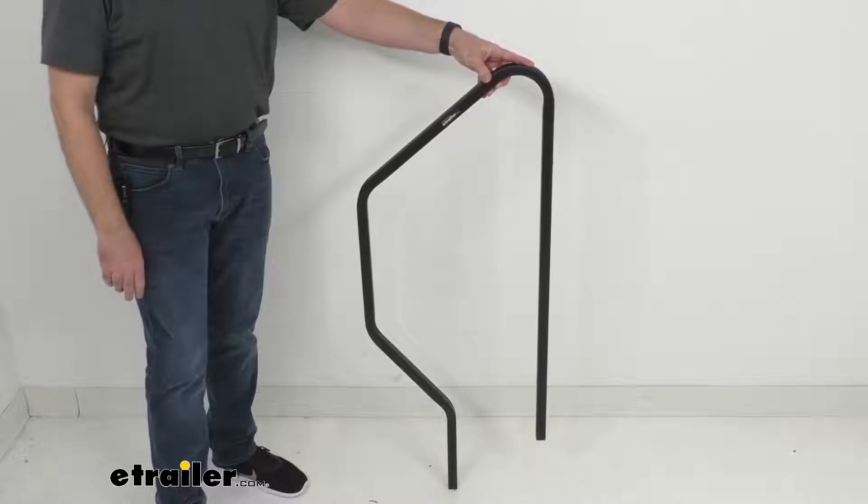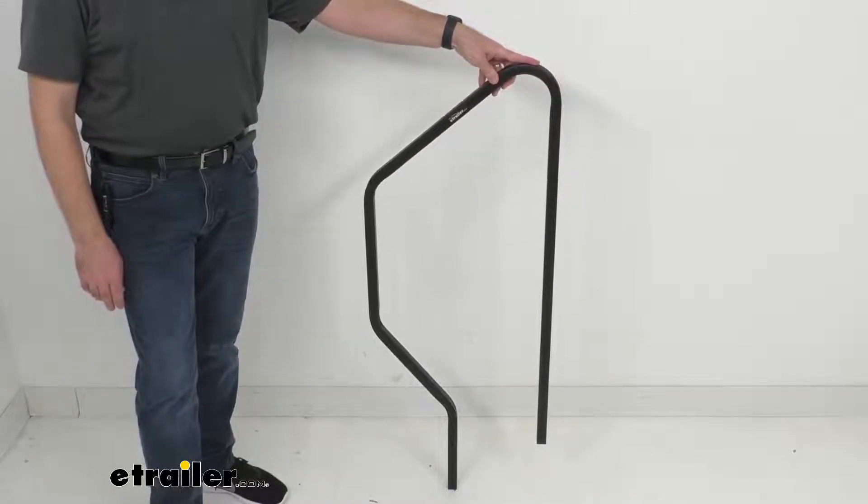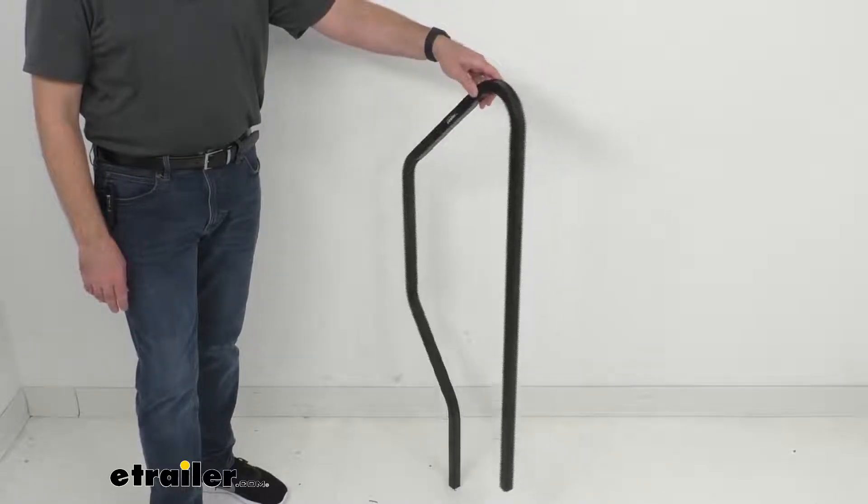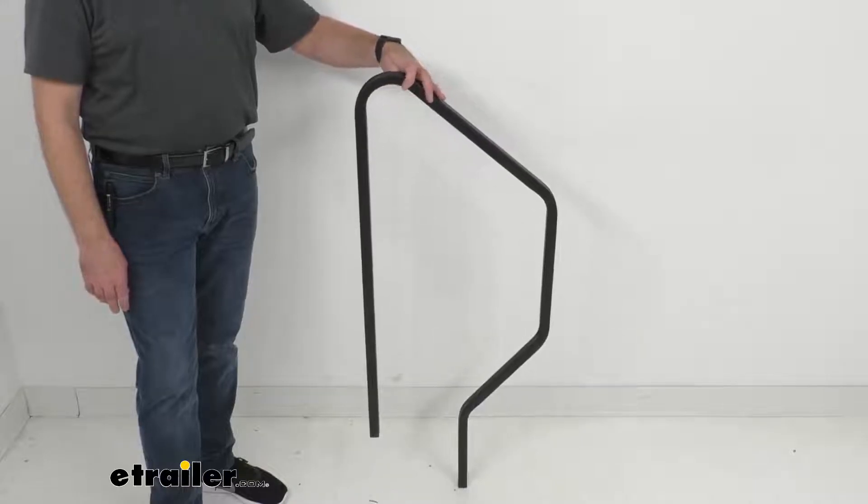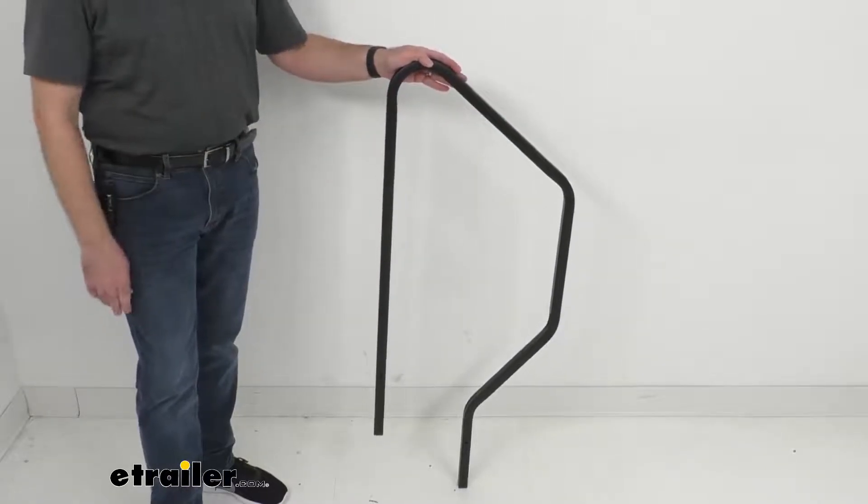And this handle is going to remain upright as you fold your steps into the doorway when it's not in use. You do need 33 inches of clearance inside your camper for when you fold your steps along with the handrail inside your camper.